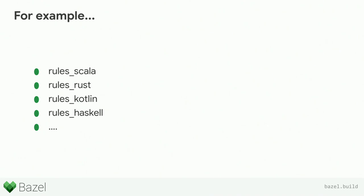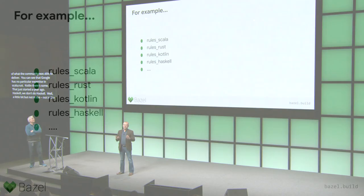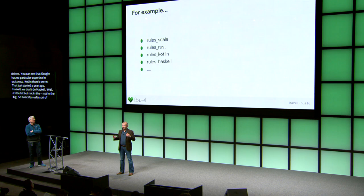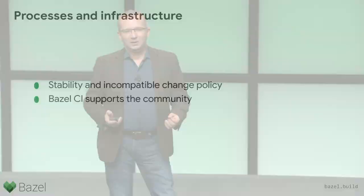Here are several projects — just examples of what the community was able to deliver. Google has no particular expertise in Scala or Rust or Haskell, but the community delivered those rule sets starting just a year ago. For the future growth of Bazel, we cannot do everything. We provide a foundation that the community, we hope, will build on. Our strong focus going forward will be enabling the community — making sure Bazel as a product works for them and that they can add and extend Bazel in a productive and frictionless way.